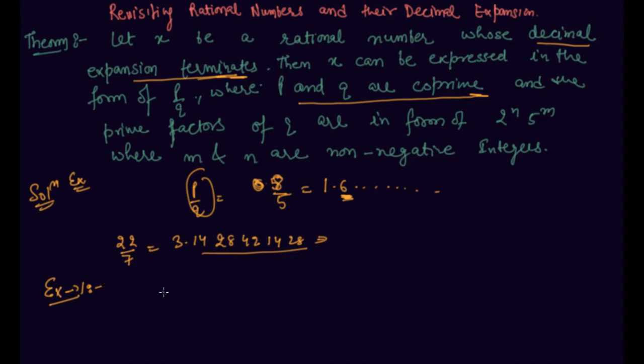Okay. So the question is like 13 by 125 is the rational number given to you. And you have to express this number as a whose decimal expansion terminates without performing actual division.